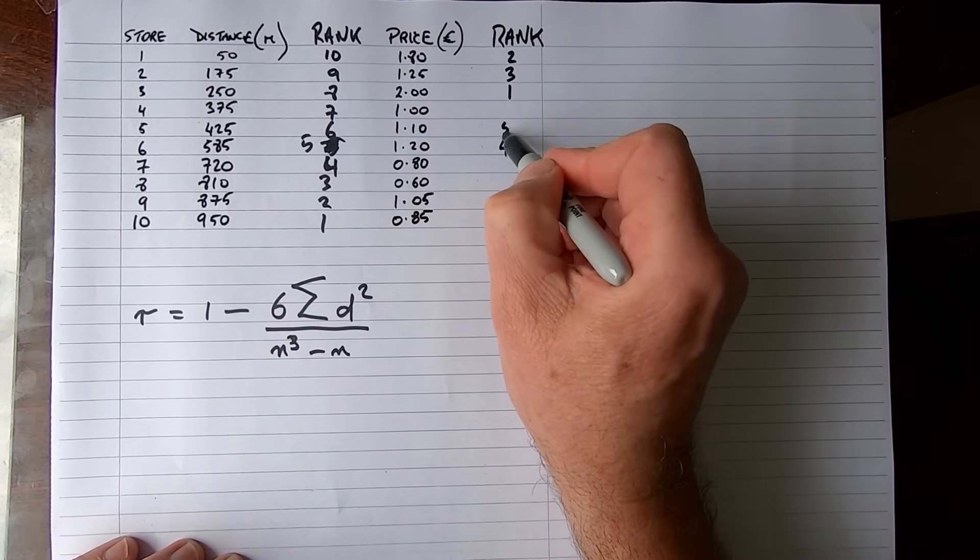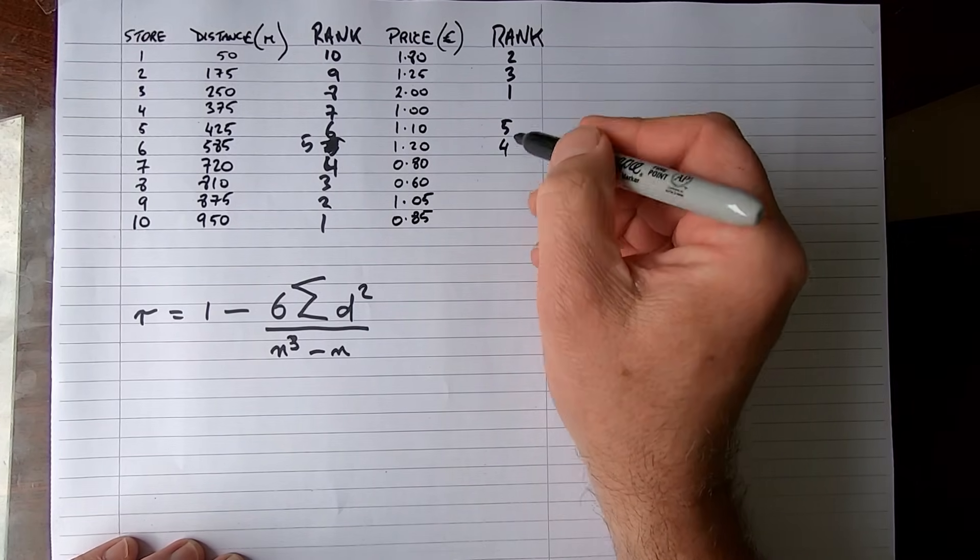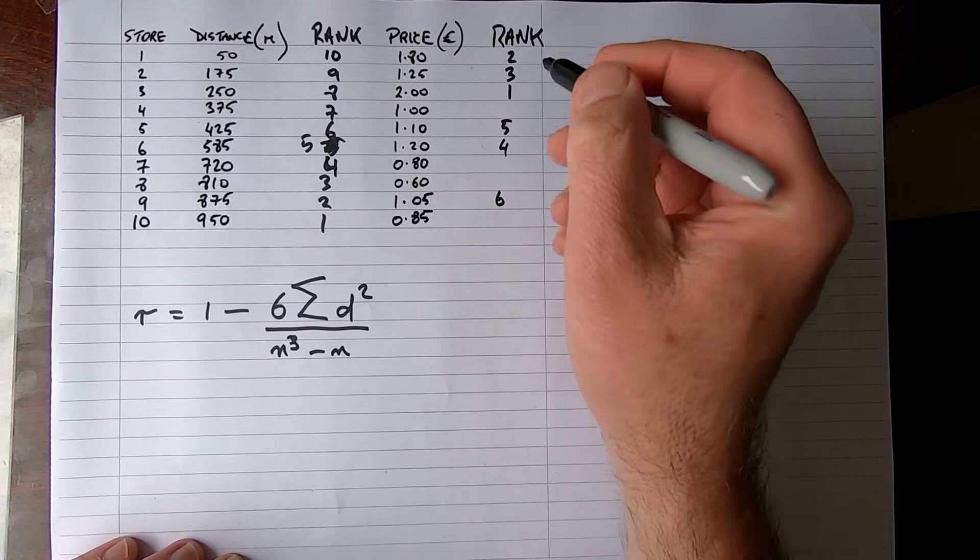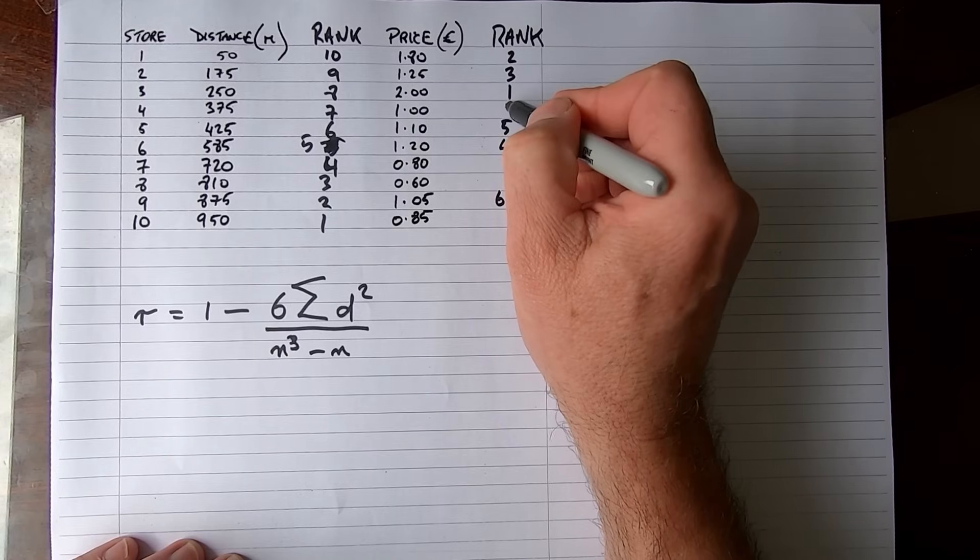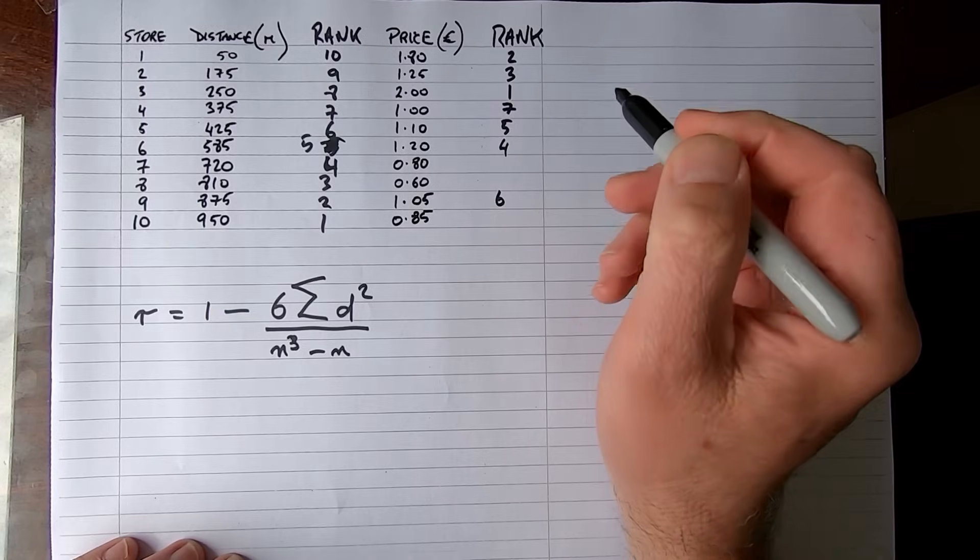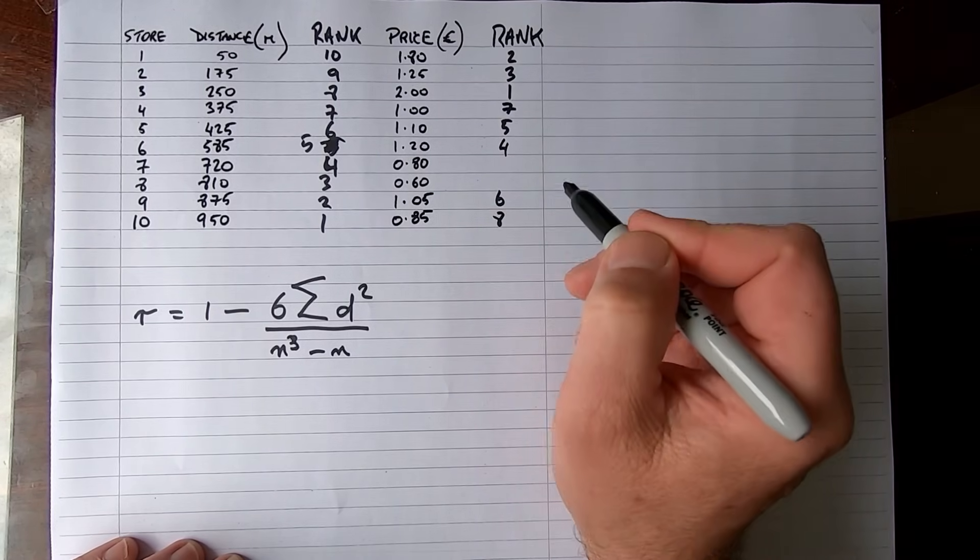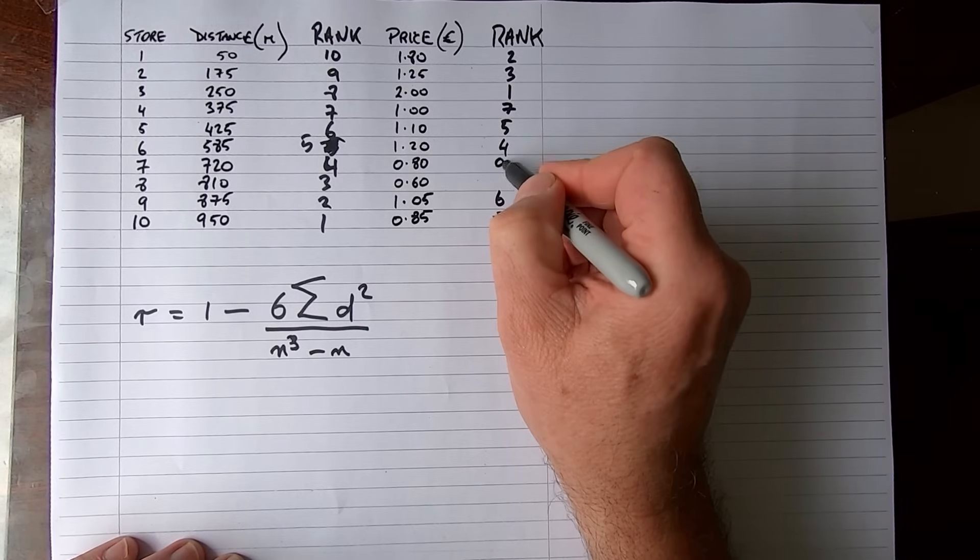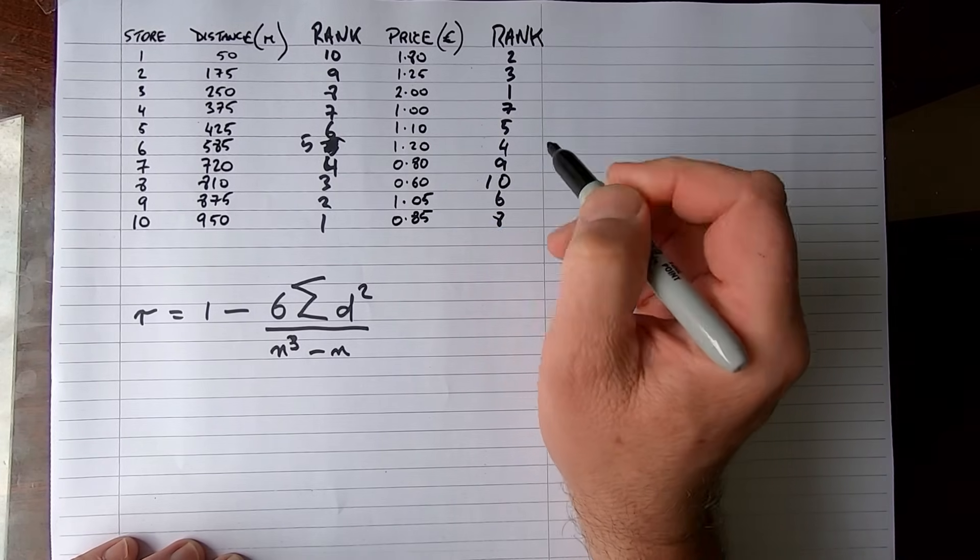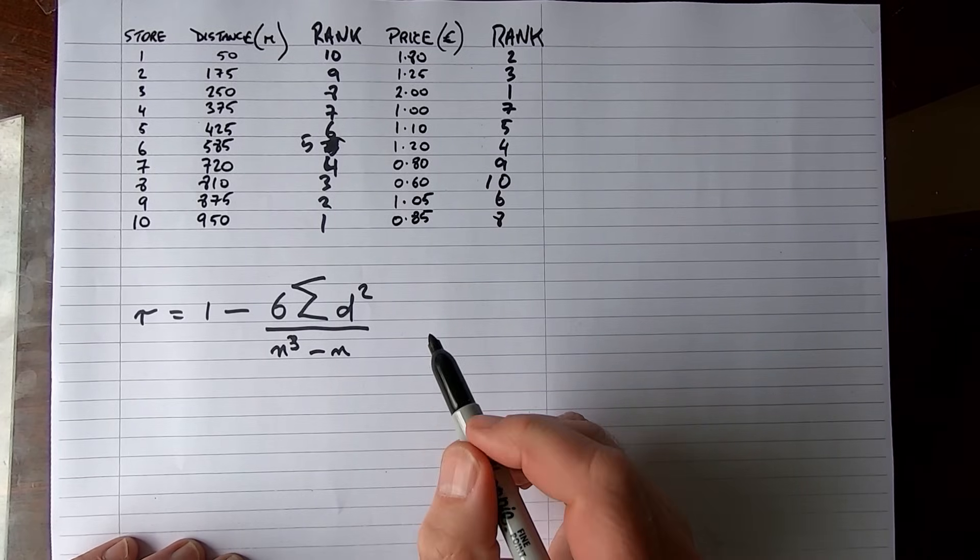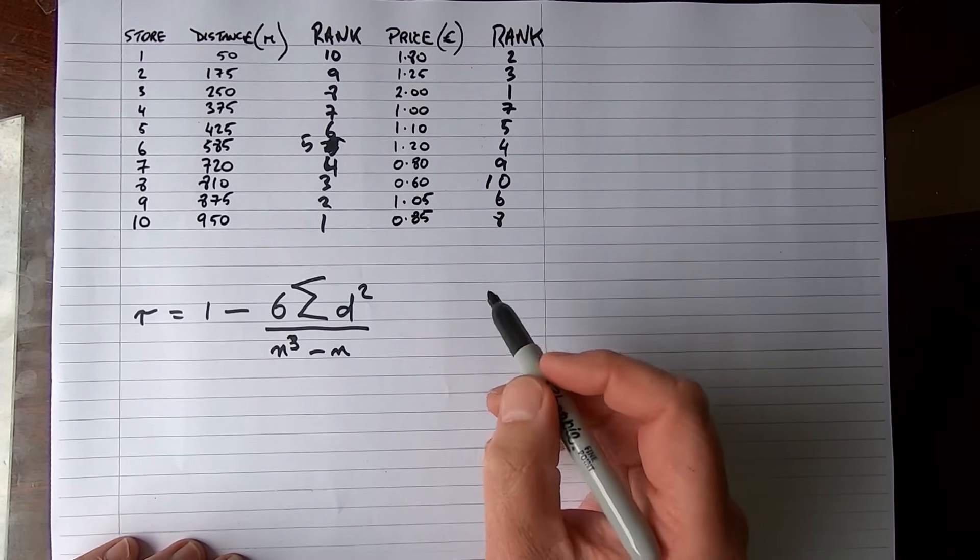Then we go down here to €1.20, that's 4, and €1.10 above it is 5. Our next most expensive bottle of water is down here near the end, which is a rank of 6. Then we go to €1.00 up here in store number four, gets a rank of 7. Then we have the last store has a rank of 8, and the rank of 9 goes to store number seven. The rank of 10, which is the lowest value of €0.60, goes to store number eight.